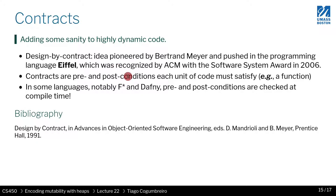But who checks these conditions? There are two options in programming languages. Some programming languages do it while the program is running, and those will suffer some performance degradation because there is some code running whenever you call a function, before and after. Other programming languages perform these checks at compile time — just by looking at the source code, they are able to confirm and prove that the preconditions and postconditions are always met, and when they're not, they let the user know.